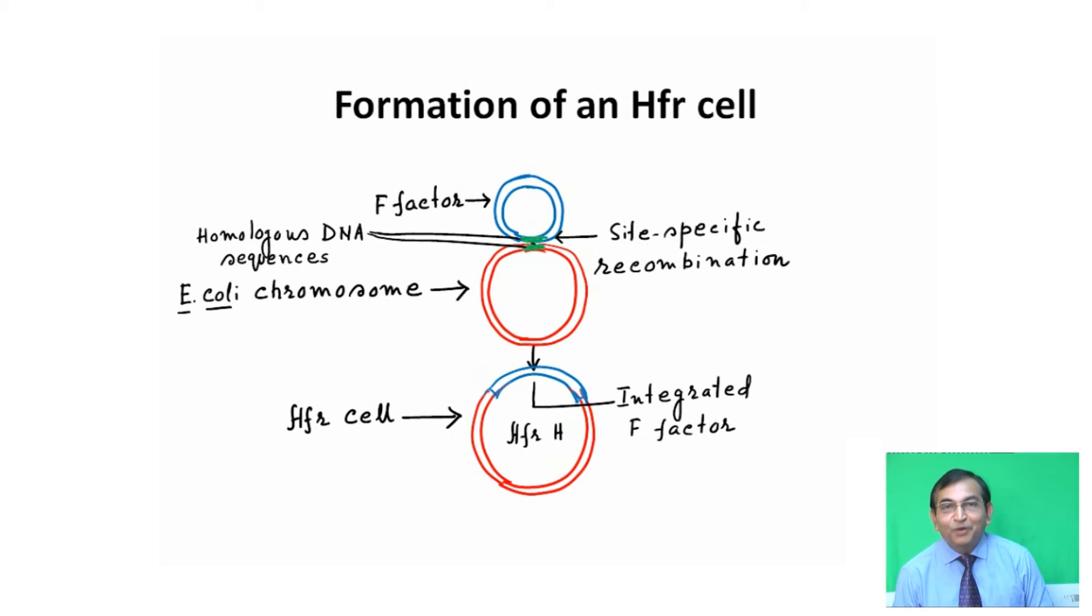Formation of an HFR cell: The F factor, a circular DNA, recombines with the host chromosome (E. coli chromosome) by means of site-specific recombination in particular homologous DNA sequences. After recombination, this integrated F factor in the host chromosome is called an HFR cell, or high frequency recombination cell.